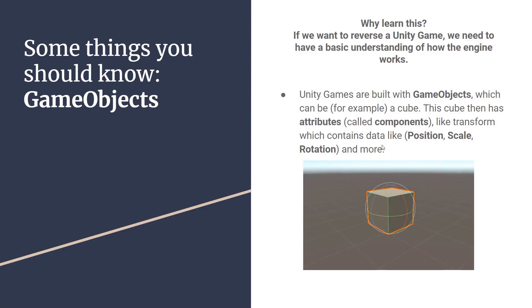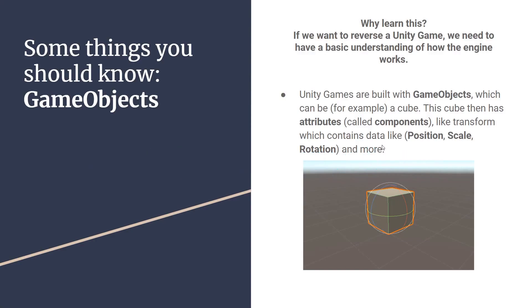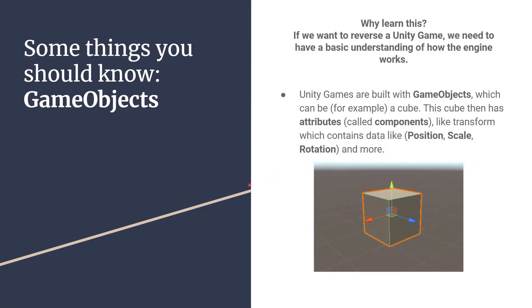Unity games are built with game objects. For example, you can see in the screenshot there's a cube. The cube has attributes in the engine called components. One component is transform, which contains data like position, scale, and rotation. So if you wanted to access this, you could do gameobject.transform.position equals whatever. Here we can see the rotation and the position from inside Unity Engine's viewport.